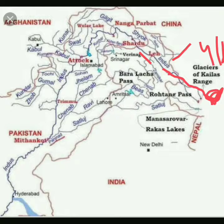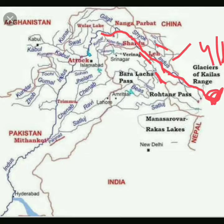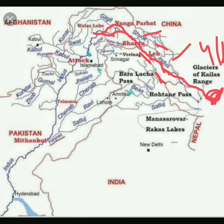It flows between Ladakh and Zaskar range — you can see the Zaskar and Ladakh range here on the map. It flows between them, and at Gilgit it forms a gorge. As written, it passes through Ladakh, then into Pakistan, cutting a gorge at Gilgit in Jammu and Kashmir.